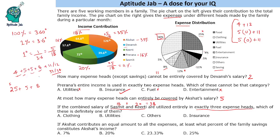8% is insurance. And 5% has two possibilities — either utilities or others. The question asks which is definitely one of the three categories. Clothing is 4% — not one of them. Utilities is 5% — maybe, but we cannot say definitely. Others is also 5% — maybe. Either one or the other will be there, but we cannot have both, so we cannot say definitely for utilities or others. Insurance is definitely there at 8%. That is the answer. One needs to be careful — insurance can be definitely confirmed; utilities and others, we might have one of these two.